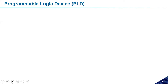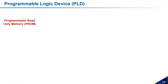Including a fourth case where both are fixed, we actually have four possibilities. The case where both are fixed is the Read-Only Memory (ROM) we have already seen. The other three possibilities are: fixed AND/programmable OR, programmable AND/fixed OR, and programmable AND/programmable OR.